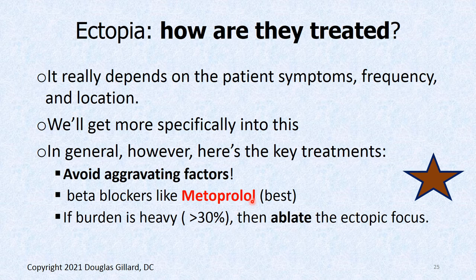If the burden of palpitations is high — like 30% of your heartbeats coming from an ectopic focus — that can actually damage the heart. That's very rare, but if it gets that bad, they go in and try to find those wild cells and zap them, burning them out. Sometimes it works, sometimes it doesn't.